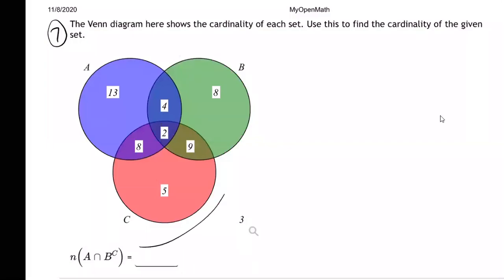Okay, so on this one, let me bring the question up here where we can see it easily. They want the number of elements in A overlap B complement. So let's write that out.